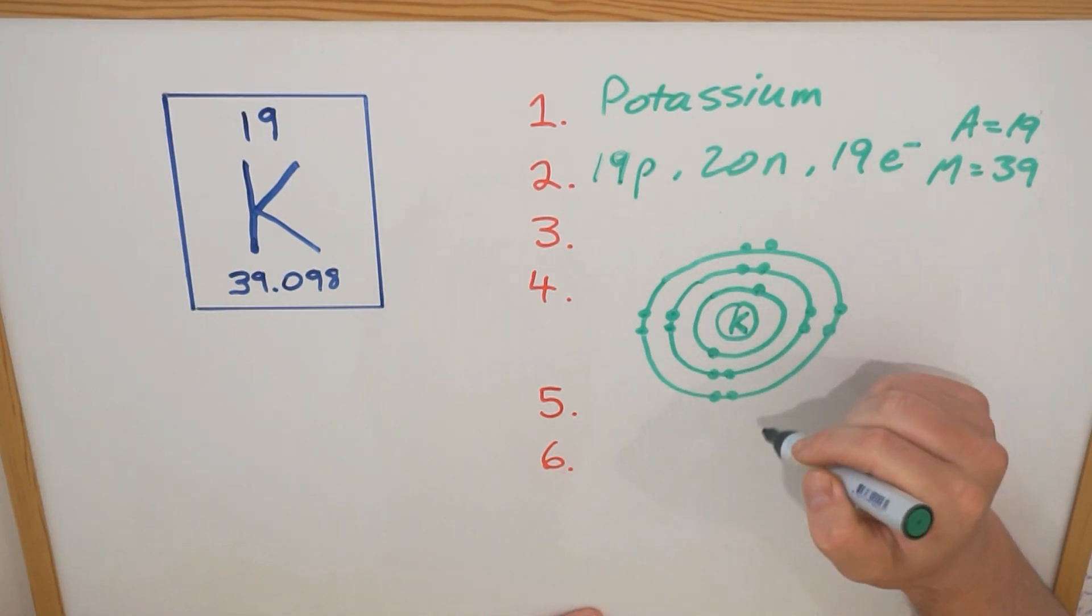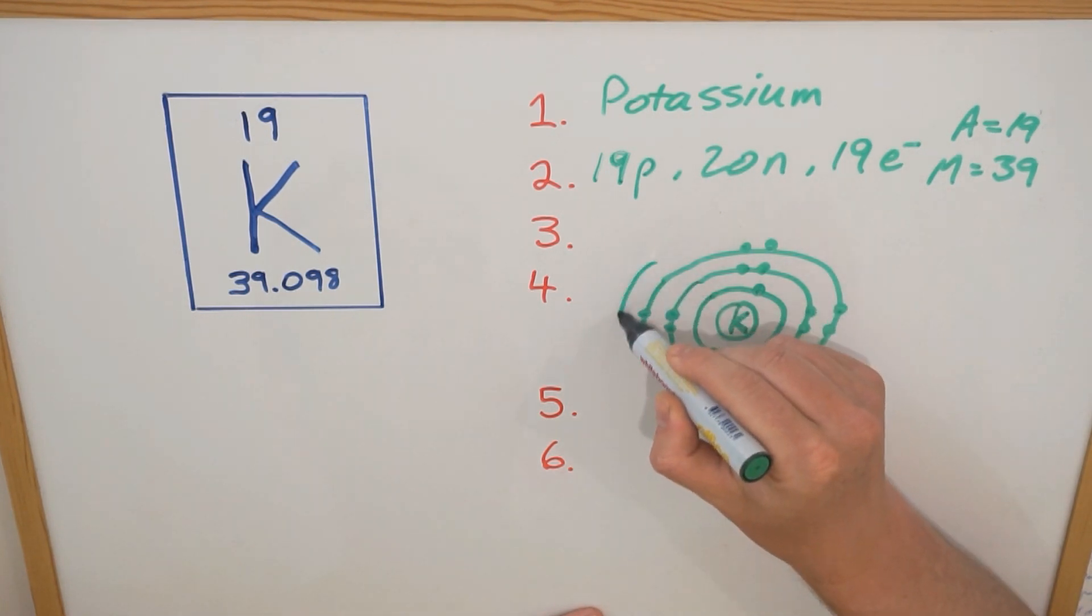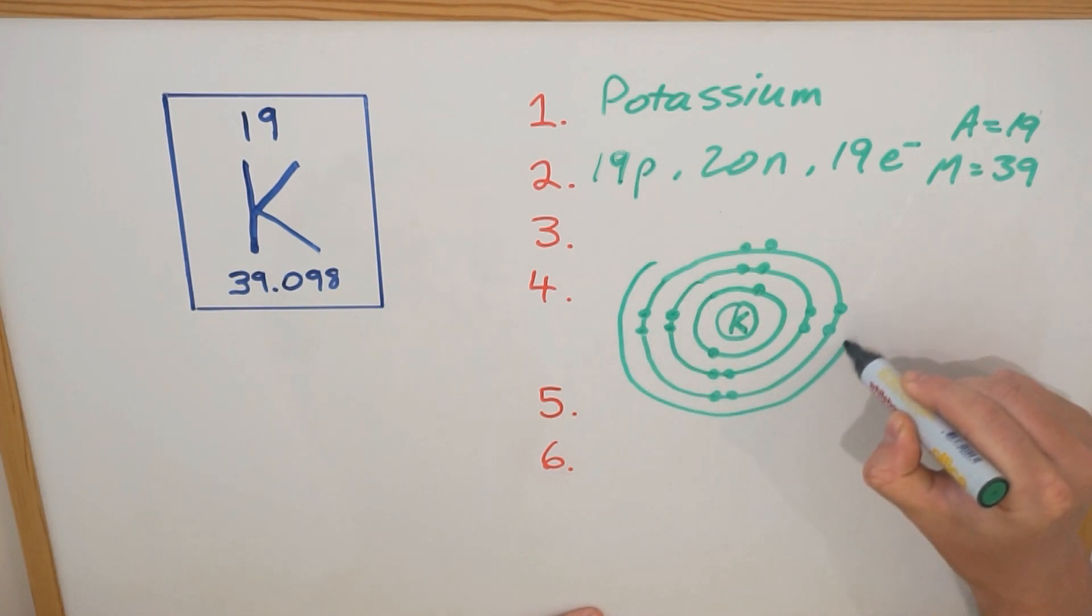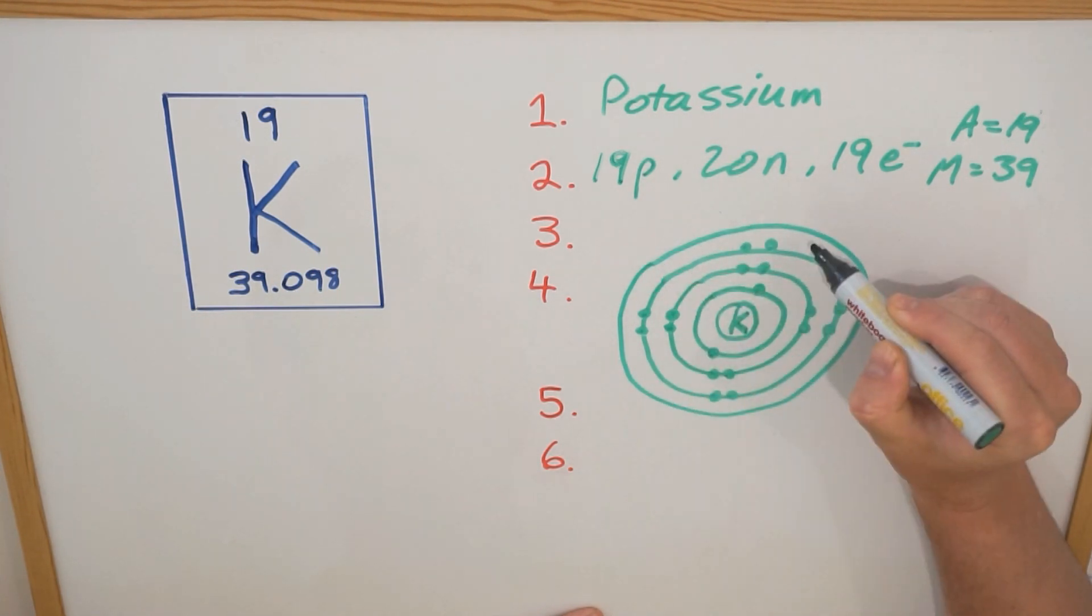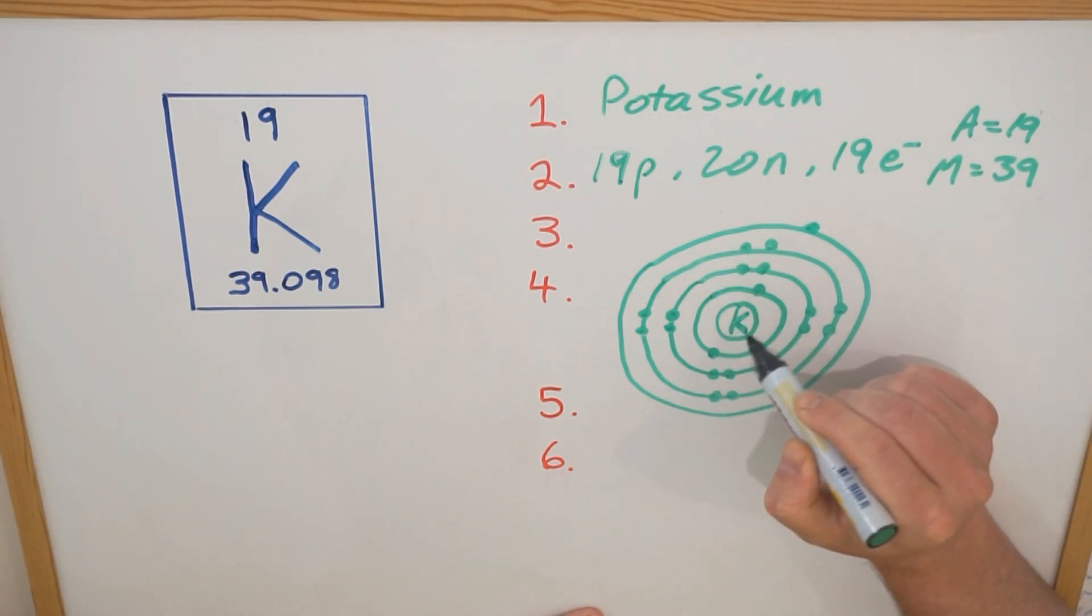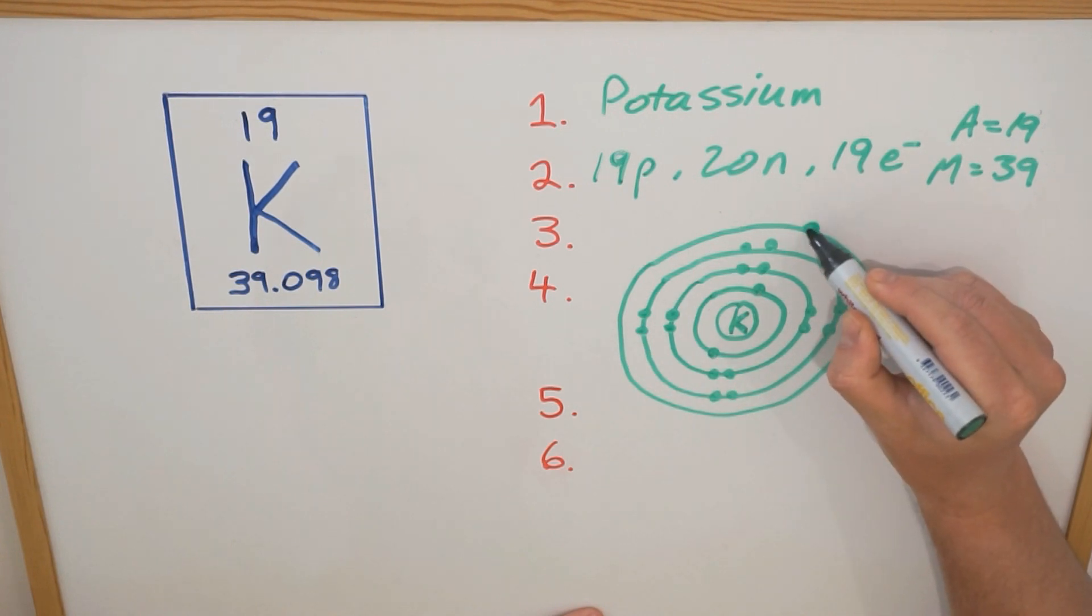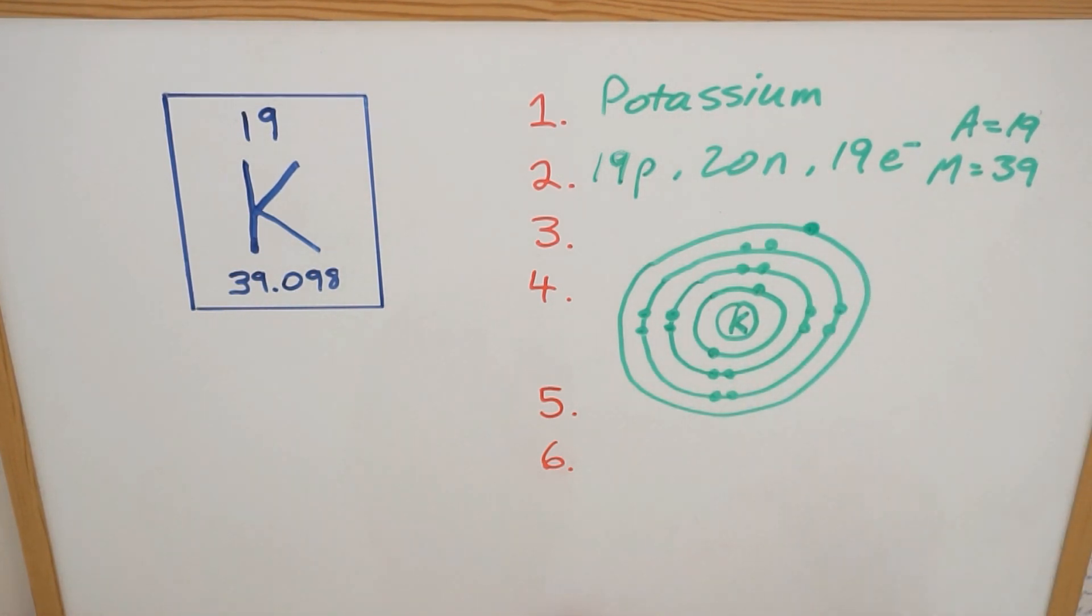So this 19th electron, the last electron, will sit on its own in a fourth shell. So we've got two in the first shell, eight in the second, eight in the third, and this last 19th electron hangs out on its own in this fourth shell.